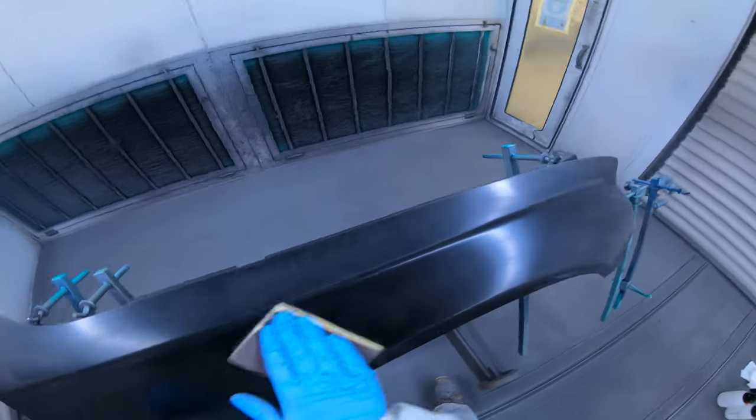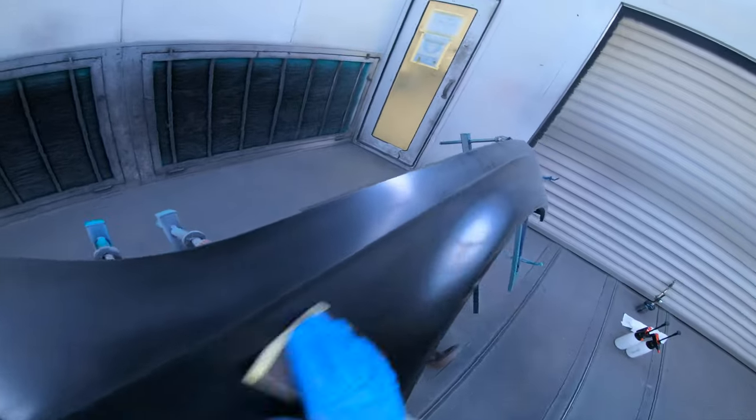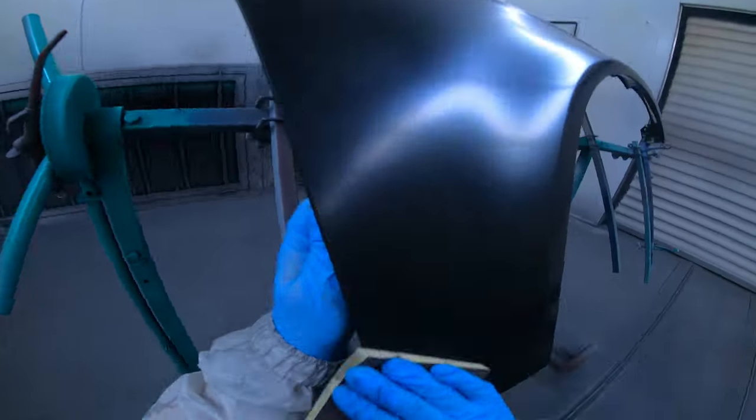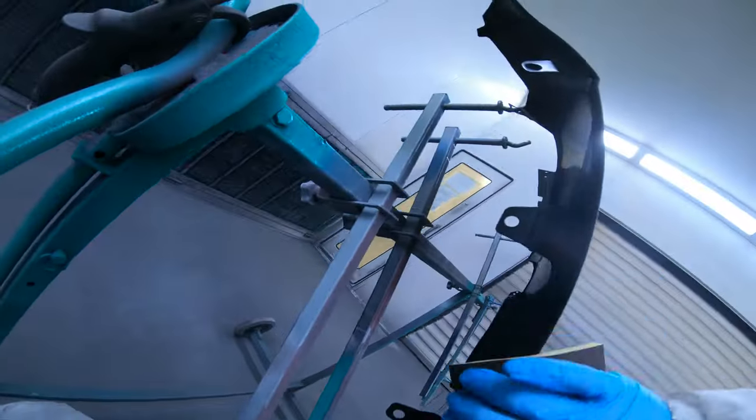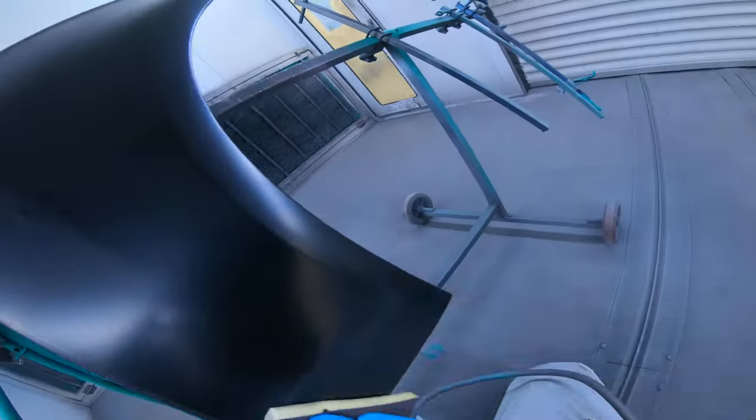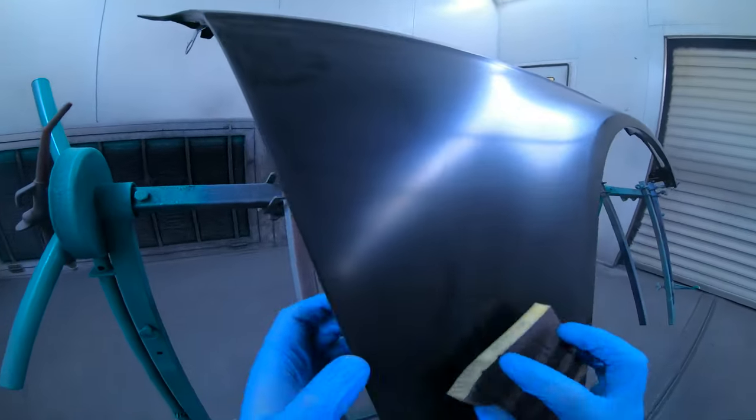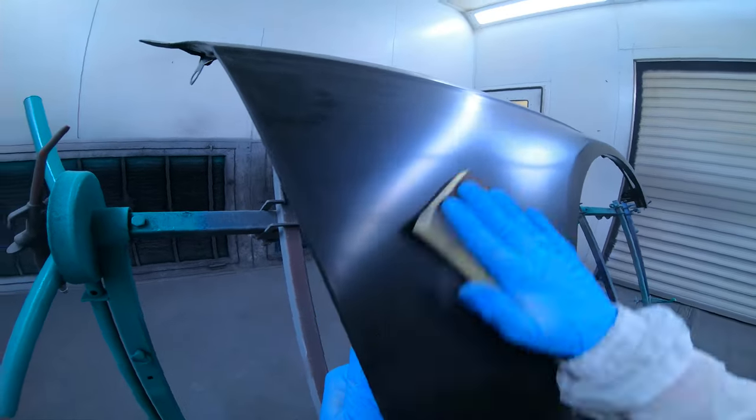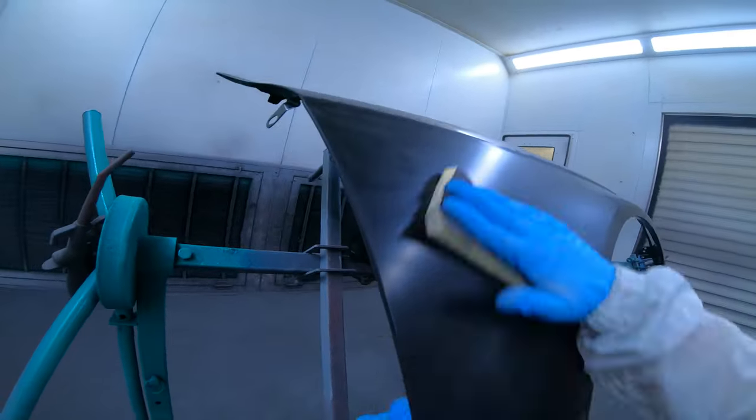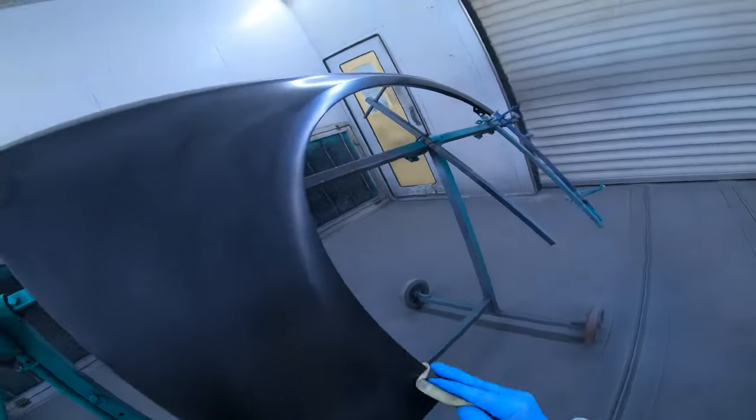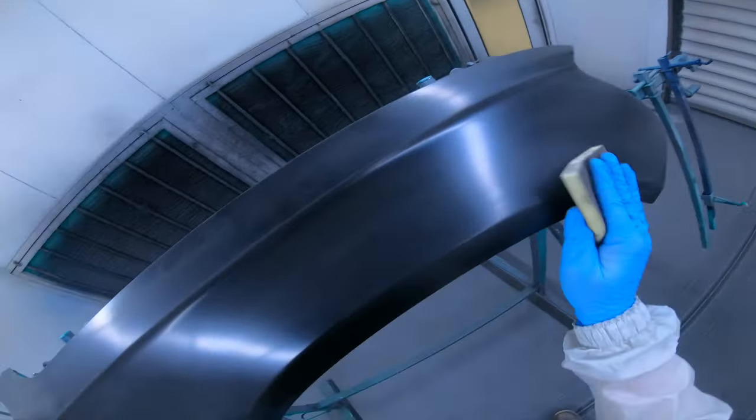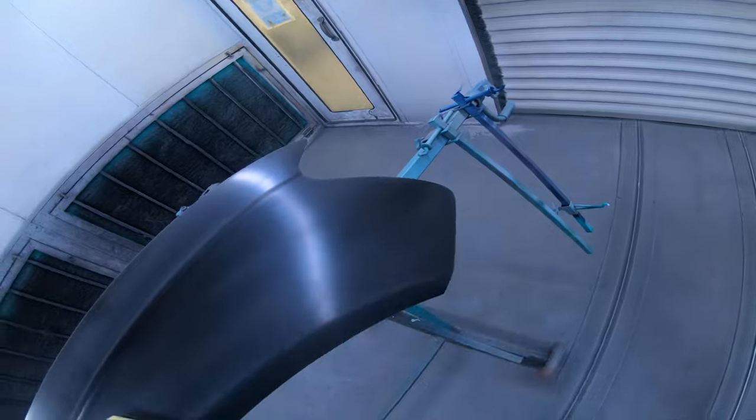This wet-on-wet that we use is very versatile. You can use it for plastics, metals. It's got very good anti-corrosion properties. I believe it can actually be mixed as a bit of a high build. You can turn it into a sanding primer as well with the various additives they've got.